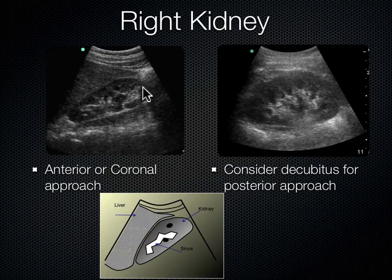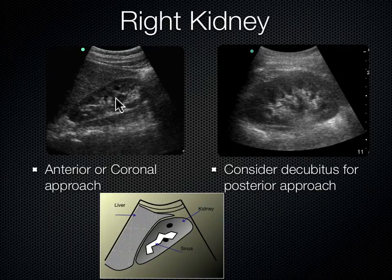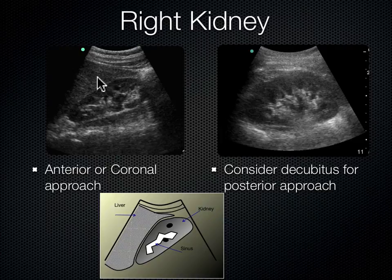The anterior or coronal approach uses the liver as a window to see the kidney. Going more posterior, you can see the psoas muscle behind the kidney — it lies right on top of the spine. So from posterior to anterior: spine, psoas, kidney, liver. You can identify the upper pole more towards the head, the mid pole, and the lower pole.